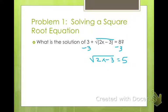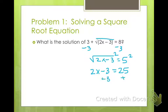Now I want to get rid of the square root, so I square both sides to cancel it out. So I have 2x minus 3 equals 25. Then I add 3 to both sides, just like I would solving a normal equation, giving me 2x equals 28, so x equals 14.